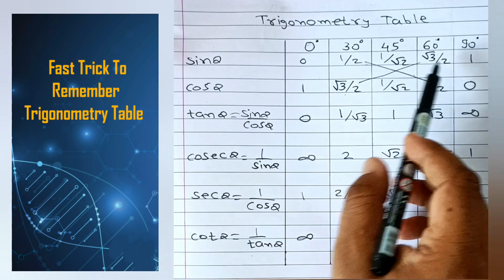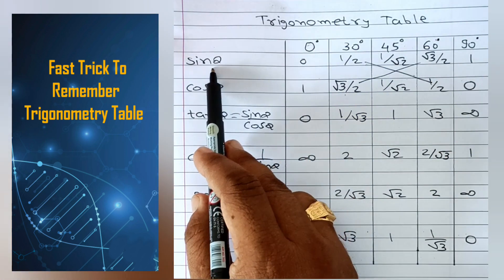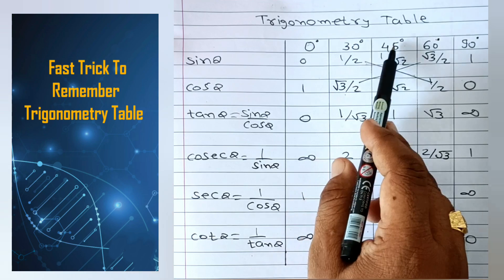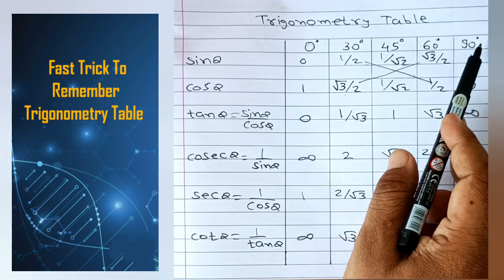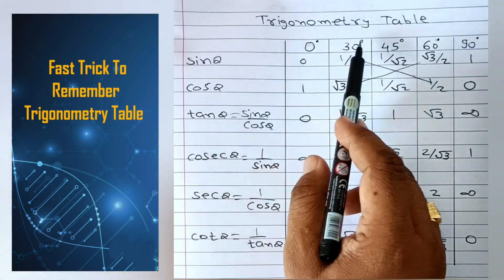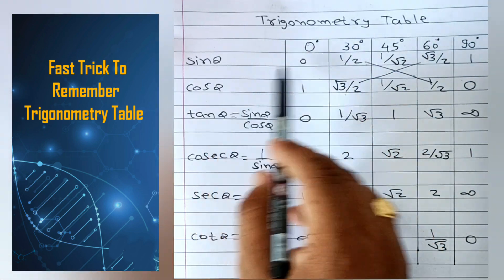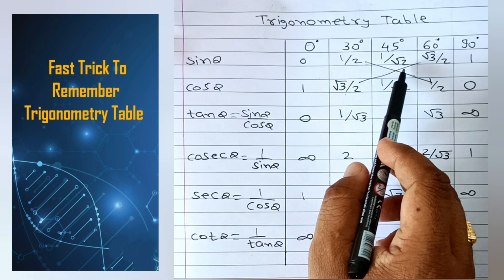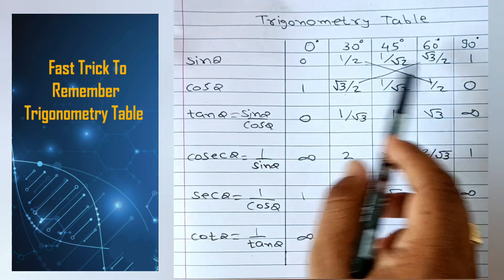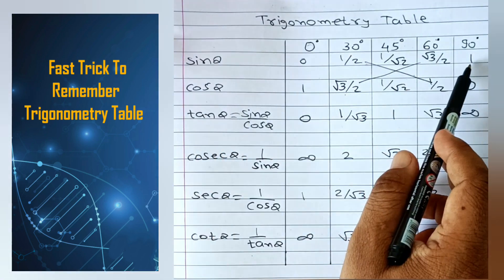Now students, the first line you have to remember is sin theta. For 0 degree, 30 degree, 45 degree, 60 degree, and 90 degree: sin 0 is 0, sin 30 is 1/2, sin 45 is 1 upon root 2, sin 60 is root 3 by 2, and sin 90 is 1.